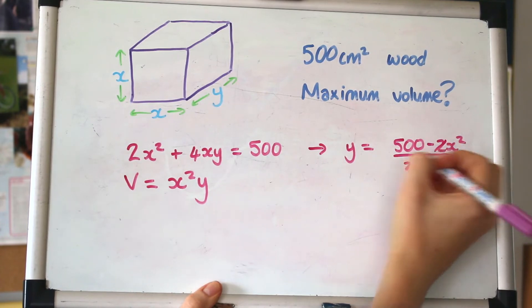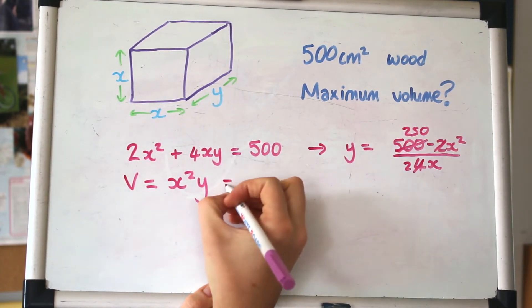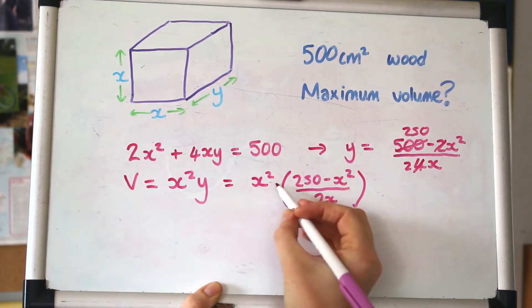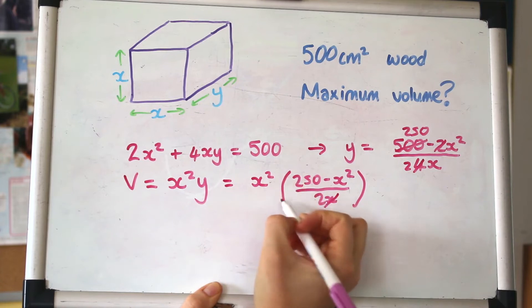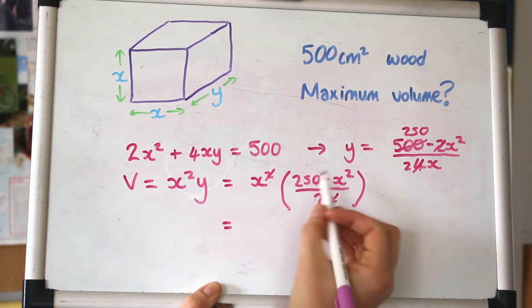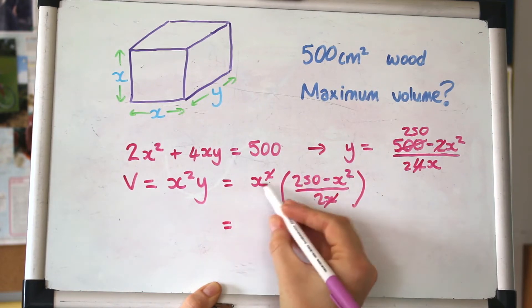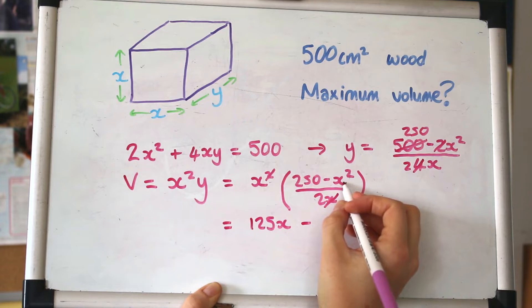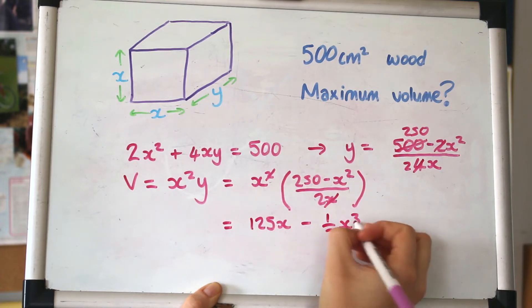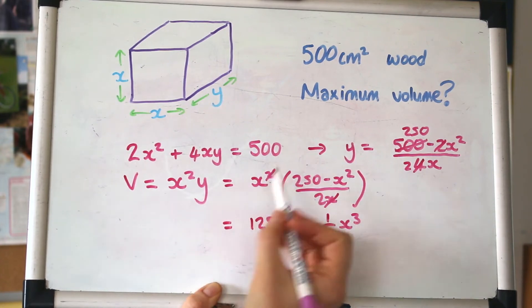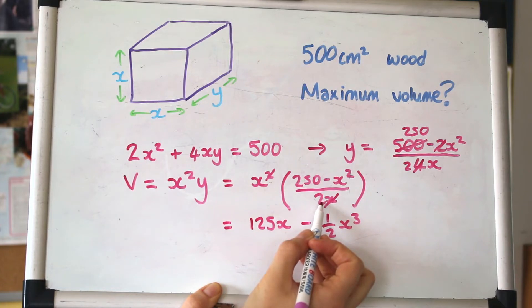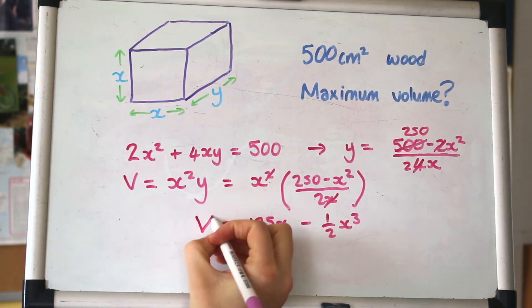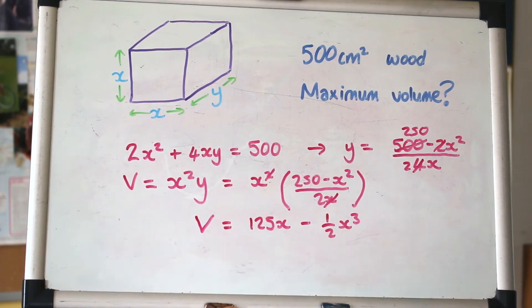In these kinds of questions, you'll always be given some information so you can set up something, but what you're trying to maximize or minimize will be a different function. We want volume, so V = x²y. That's what we're going to differentiate. The problem is we've got two variables and we only want one variable.